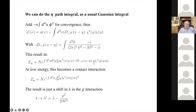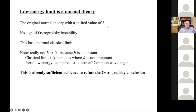At low energy this becomes a contact interaction — just 1/M². You shift the chi-to-the-fourth integration by a small amount (this is the Planck mass, g is dimensionful, but this is a very tiny shift in the quartic interaction). It limits to a particularly simple and normal theory — basically the original theory with just a small shift due to the massive state buried in the value of lambda. There's no sign of the instability; it has a normal classical limit. Ostrogradsky hasn't been seen in this calculation.